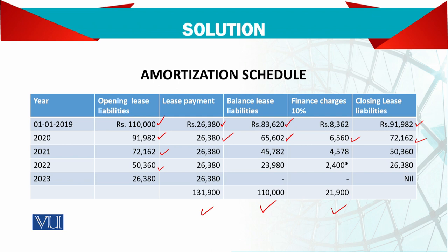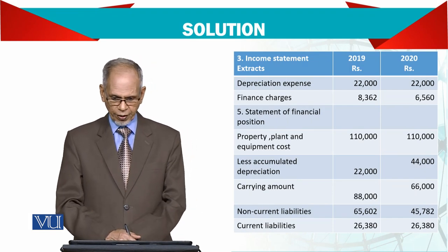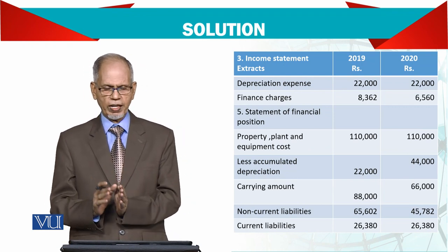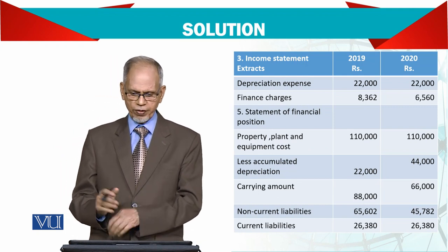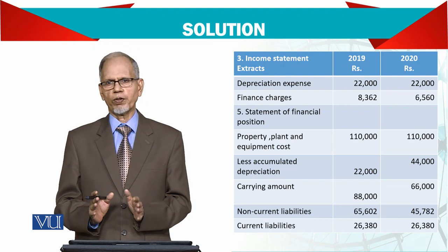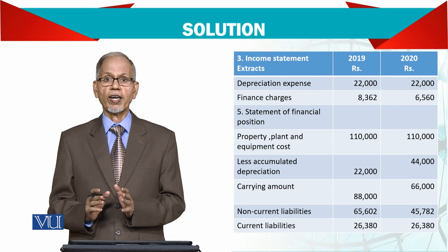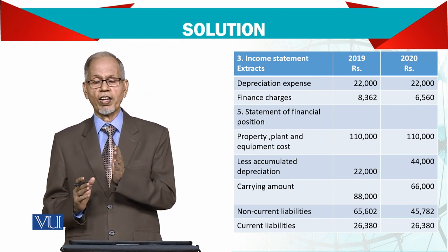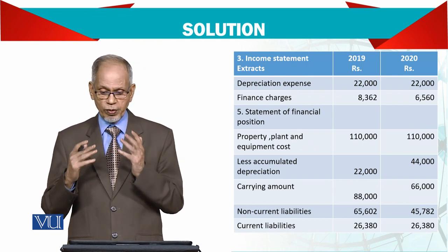Now let's see how it will be recorded in the income statement and balance sheet. In the income statement, depreciation is 22,000. I am preparing two years: 2019 and 2020 — you can prepare all five years, but let's cover the first two. Depreciation expense remains the same for both years at 22,000, but the finance charge is different each year because as you make payments your liability reduces, so the interest amount also reduces.